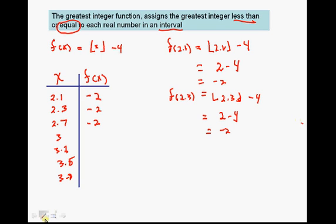Let's take a look at f(3) minus 4. It says less than or equal to, so less than or equal to 3 is just equal to 3 minus 4, and that's equal to negative 1. There's a pattern going on here.